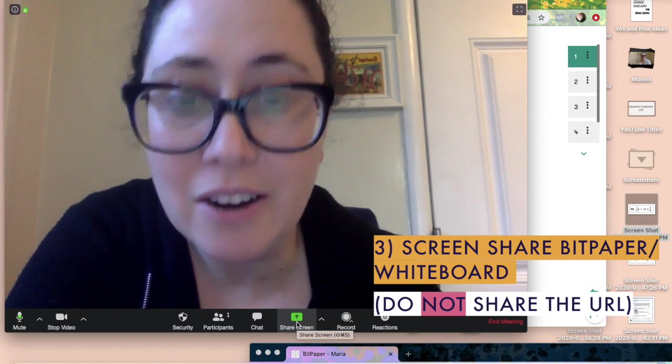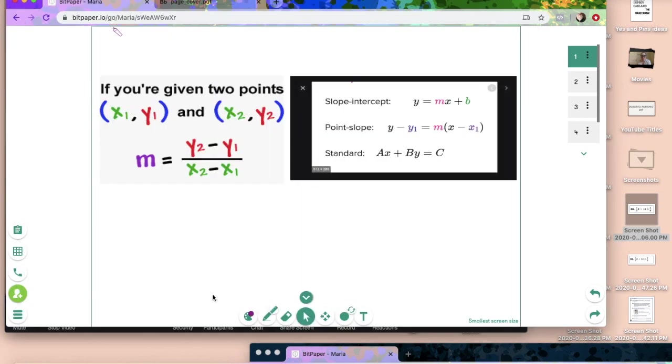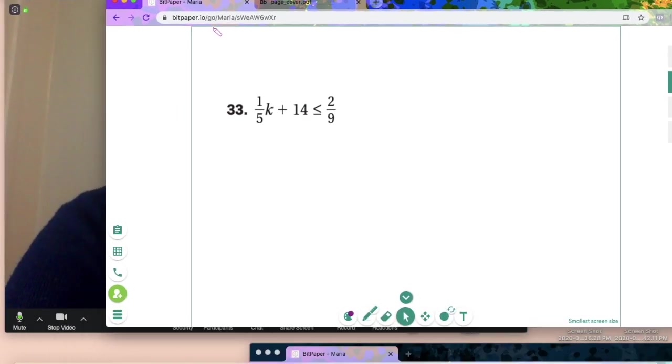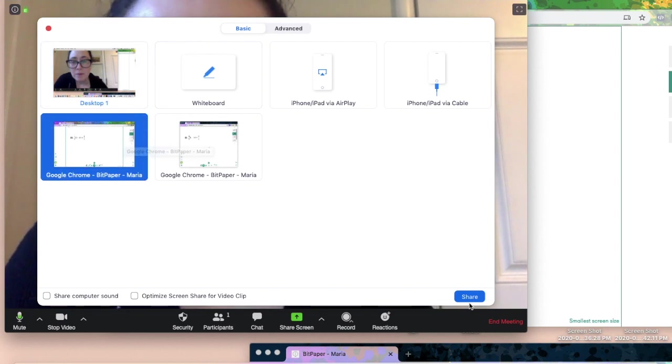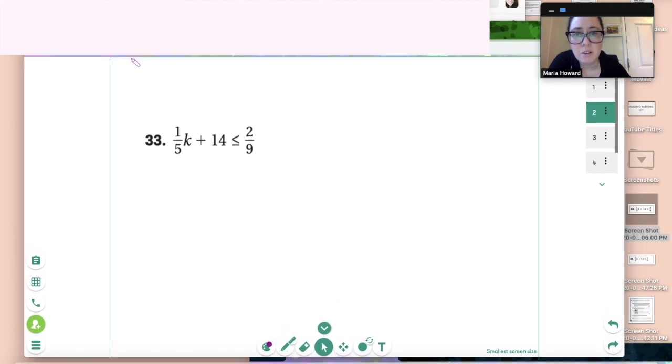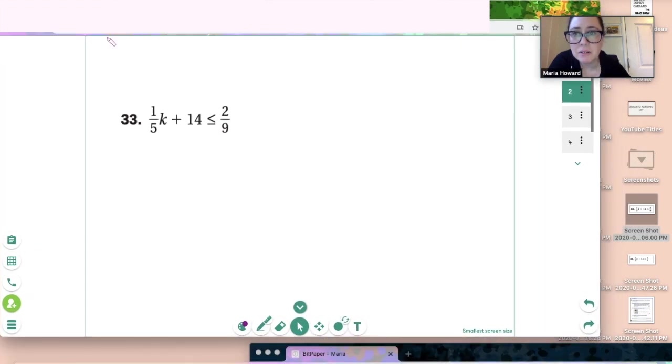After we get all settled in, then I would share the screen. I would not share the URL. If I was teaching a whole class of kids, I would not share the URL to the Bitpaper, because I do not want them to all be able to write on this all at once. It would be chaos. Instead, I would just share in Zoom. I would do the screen share in Zoom of my Google Chrome. It would look like this. And you can see here, this is what now my students can see with me in the corner.